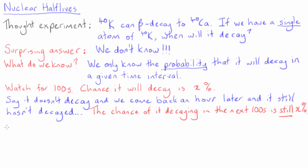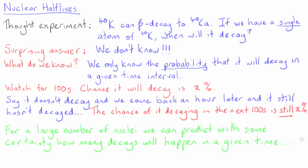This constant probability leads us to the following observation. For a large number of nuclei, we can predict with some accuracy how many decays will happen in a given time. However, for any one nucleus, the exact time of its decay is inherently probabilistic and cannot be predicted with any certainty.